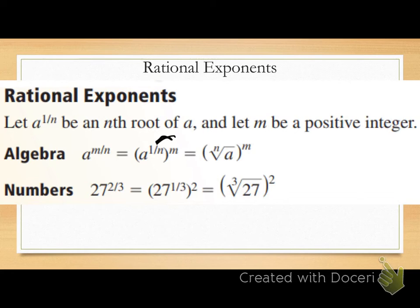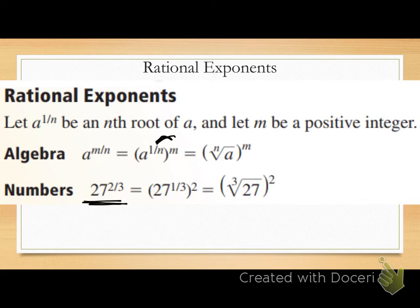Once you get the hang of this, I'm okay if you skip that first step and jump straight to recognizing that 27 to the two-thirds means taking the cube root of 27 and raising it all to the second power.